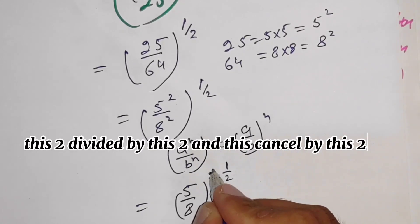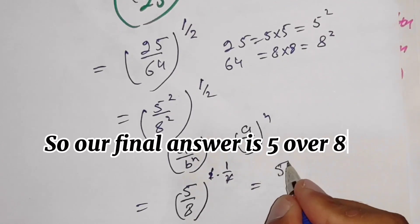This 2 divided by this 2. This 2 cancelled by this 2. So our final answer is 5 over 8.